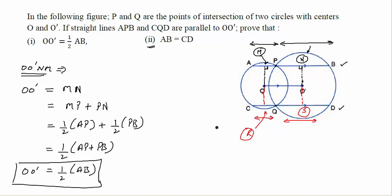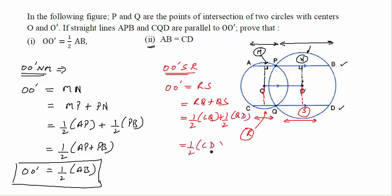Now, proceeding in the similar way, you can again see that the quadrilateral OO'SR will again become a rectangle, which means that OO' will again become equal to RS. Again, I can break RS as RQ plus QS, which can be further written as half of CQ plus half of QD. If you further combine these two things, it will become half of CD. So now, your OO' is also equal to half of CD.